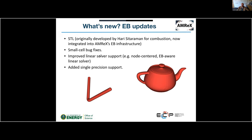The triangle mesh support takes a list of triangles and computes all the area fractions, volume fractions, normals, and other quantities needed to represent the EB. It was originally developed by Hari for the Pele suite of codes and has now been integrated into AMReX's EB infrastructure. There have also been small cell bug fixes, improved linear solver support with a node-centered EB-aware solver, and improved single-precision support with EB.